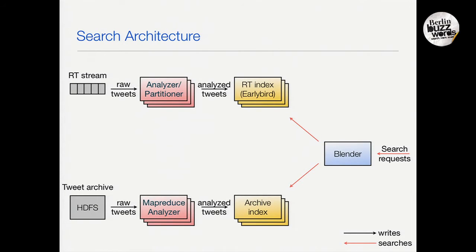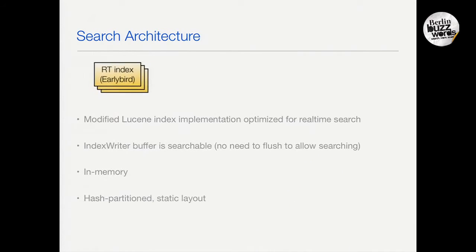The output of the analyzer — analyzed tweets ready for indexing with Lucene — are stored in Thrift, which is a data serialization format that Facebook invented and is also open source. The partitioner analyzer emits tweets in serialized format. The real-time index — our code name is Earlybird — all tweet systems have either 'bird' in the name or are named after a bird. Our Lucene index is called Earlybird.